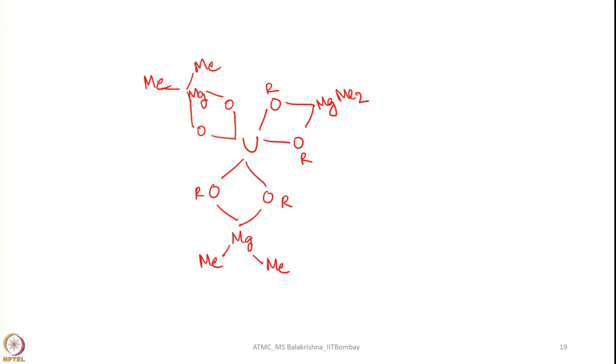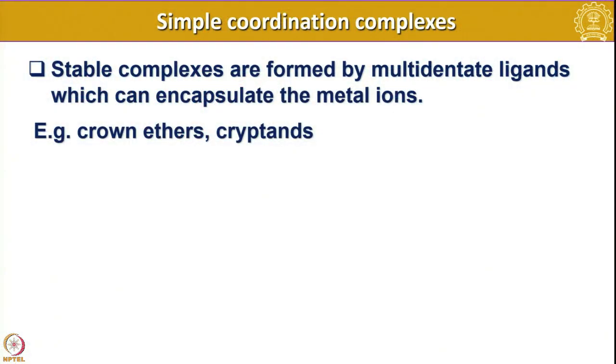These are a few examples of mixed ligand complexes. Another important class of ligands we come across are crown ethers. Stable complexes are formed by multidentate ligands. The advantage of multidentate ligands is they can very nicely encapsulate a metal ion and provide extra stability. In that context, crown ethers and cryptands are very important ligand systems, essentially used to stabilize cations when we have anionic transition metal complexes. Cations such as alkaline earth metals or alkali metals can be nicely stabilized so that the compound is stable and can be crystallized easily to understand bonding parameters.